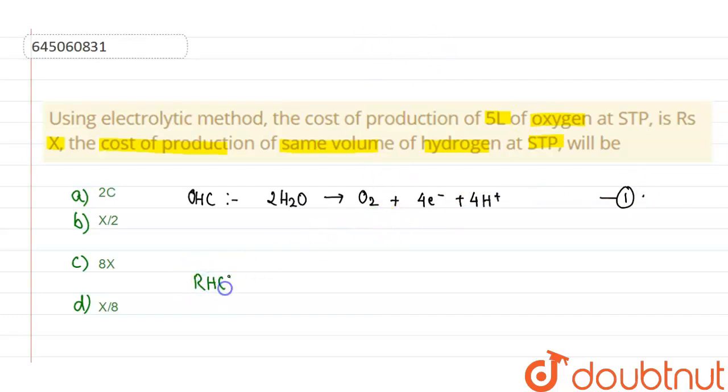So the second reaction will be reduction half reaction. 2 electrons will be gained by 2 hydrogen positive ions and it will be giving us H2. So this is the second reaction and here hydrogen production will occur.